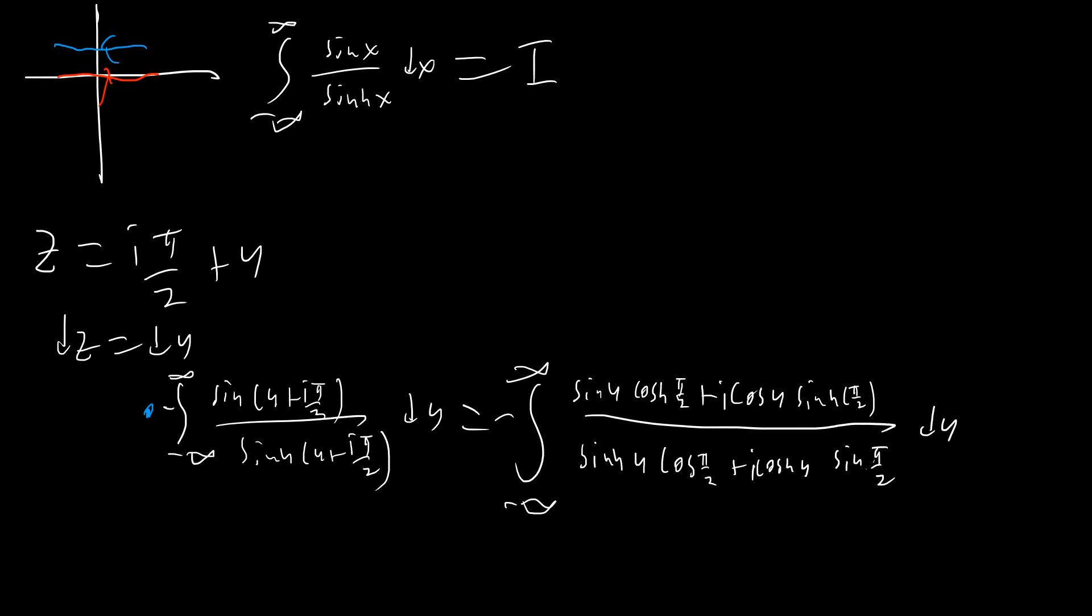So if we go ahead and look at the bottom, cosine of pi over 2 is 0. So this is just going to disappear. And sine of pi over 2 is just 1. So that's going to disappear as well. And on the bottom, we just have i cosh of u.